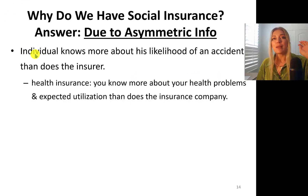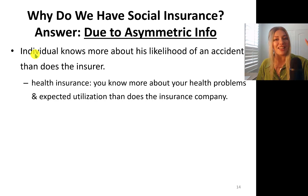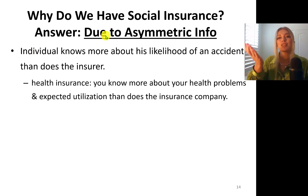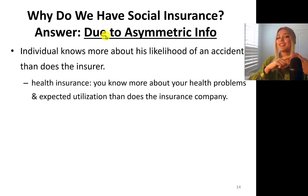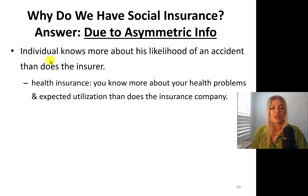Individuals know better about themselves — their likelihood of getting into an accident than the insurer. So this is asymmetric information. Asymmetric information means the insurer and the insured have different kinds of information regarding the true risk of the insured getting into that negative state of the world.